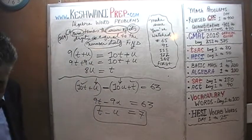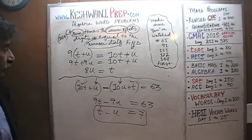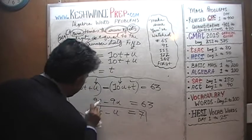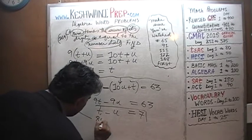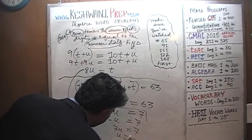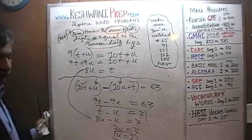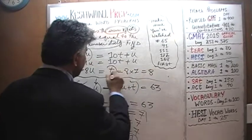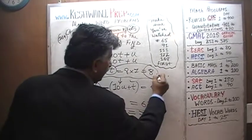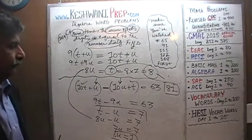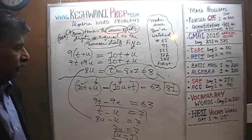We can now solve for the two variables. Substituting t equals 8u into t minus u equals 7: 8u minus u equals 7, which means 7u equals 7, so u equals 1. Our unit digit is 1. If the unit digit is 1, then the tens digit is 8 times 1, which is 8. The tens digit is 8, the units digit is 1 — the number we are looking for is 81.